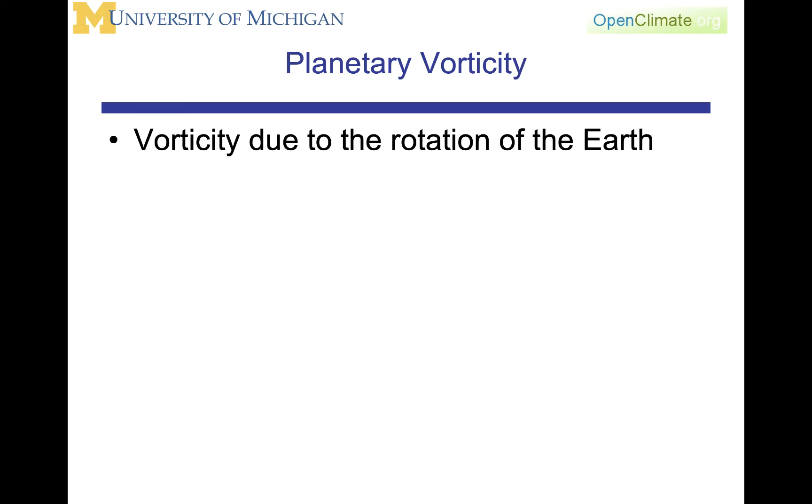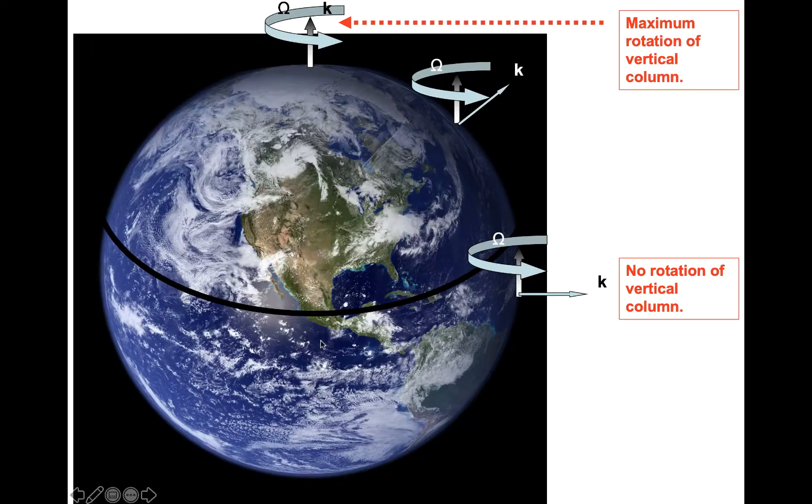The planetary vorticity is the vorticity due to the rotation of the Earth. If we go back to this figure that we looked at a number of times early in the course, where we talked about the rotation of the Earth and the importance of knowing the radius at any particular latitude, what we were interested in is the rotation around the k unit vector of the local vertical. Here is our tangential coordinate system, here is the vector of the orbital axis, and what we want is the component of this in the local vertical. We see that this is maximum at the pole, zero at the equator, and some value in between, which is f, the Coriolis parameter, which is two omega times the sine of the latitude.